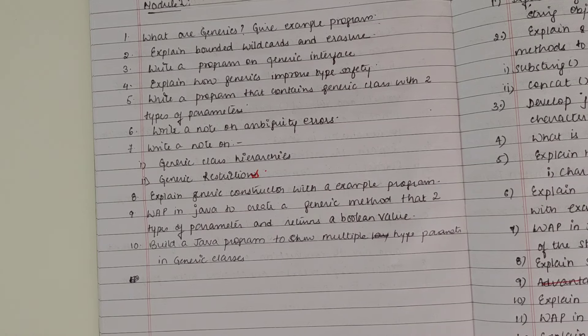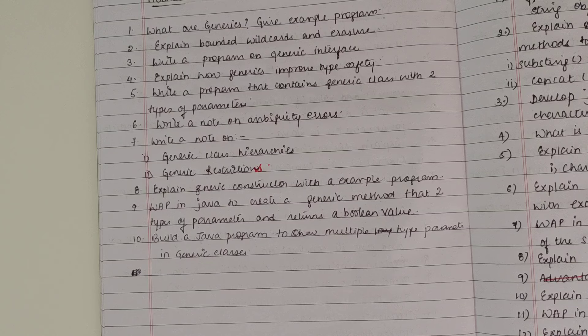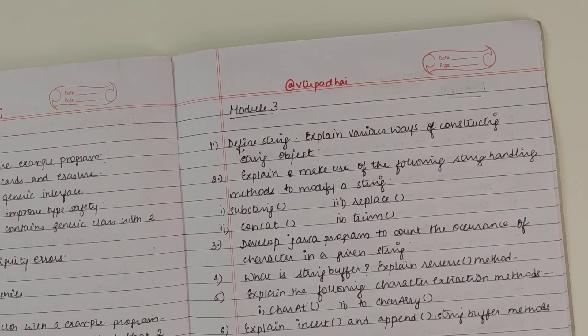Build a Java program to create a generic method that contains two types of parameters and returns a boolean value. All these Module 2 questions are mainly solved and explained properly in the module-wise video, so you can just go and refer the playlist. Everything is uploaded.